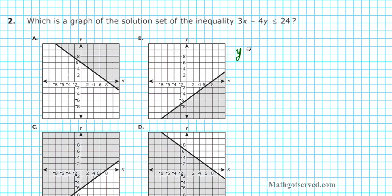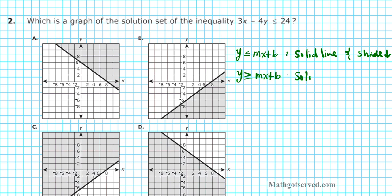If you have the inequality y is less than or equal to mx plus b, you are going to have a solid line and you're going to shade down. You have a solid line because of the line of inclusion — that means the line will be solid. You shade down because it's less than. The other case is y is greater than or equal to mx plus b — in that case you have a solid line again and you shade up, because you have greater than.